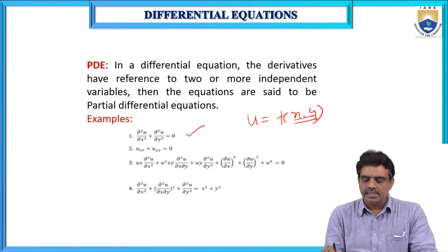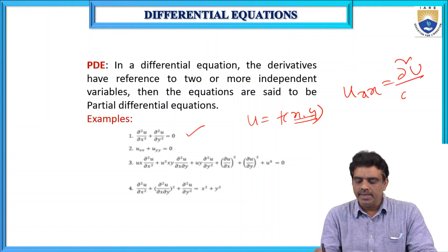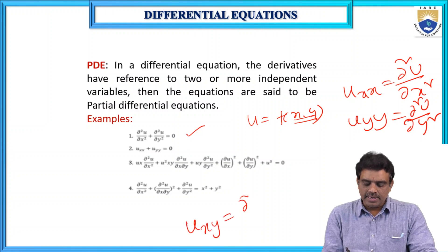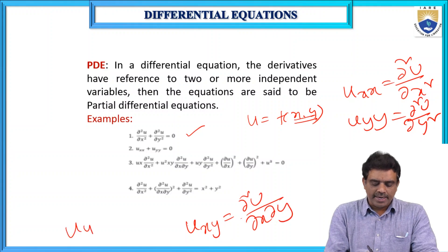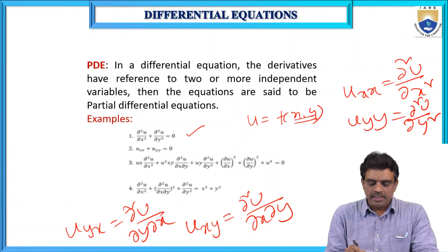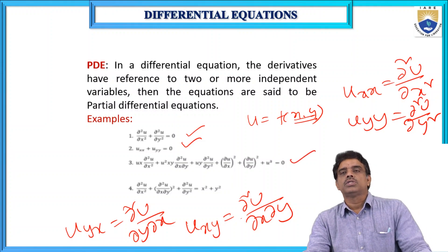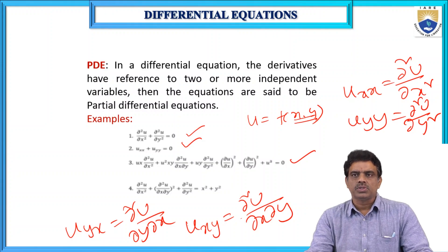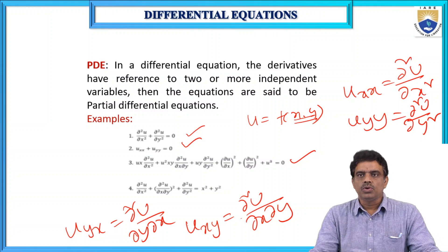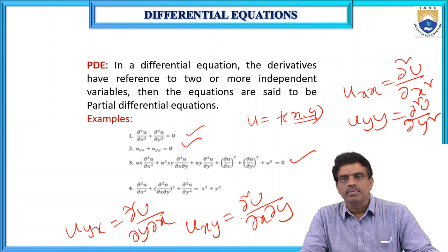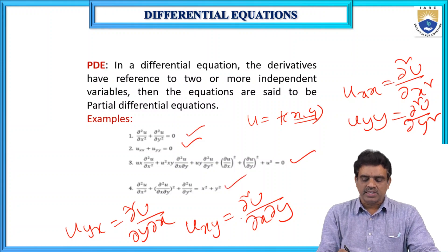The notation used is: u_xx means ∂²u/∂x², u_yy means ∂²u/∂y², u_xy means ∂²u/∂x∂y, and u_yx means ∂²u/∂y∂x. The second and first equations use different notation but represent the same thing. In the third equation, u_x·∂²u/∂x² + u_xy·∂²u/∂x∂y + u_y·∂²u/∂y² + (∂u/∂x)² + (∂u/∂y)² + u² = 0 — the derivatives here also have reference to two variables x and y, so this is also a partial differential equation.